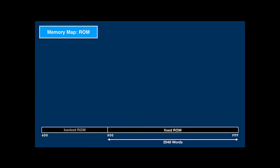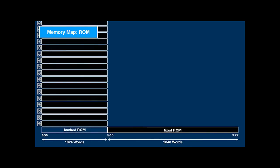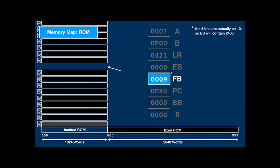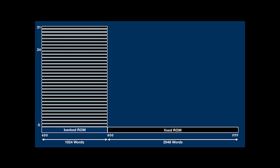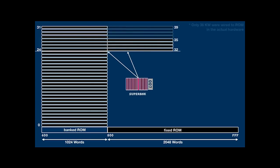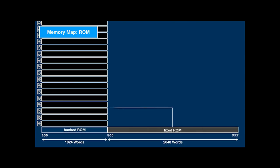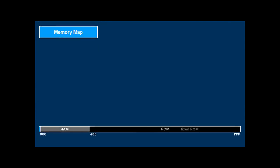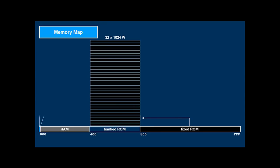ROM is organized similarly. The lower kiloword is banked; the fixed bank register (FB) selects one of the 32 banks. Support for more than 32 kilowords of ROM was added at the last minute. The super bank bit can switch the uppermost eight banks to a second set so that a total of 40 kilowords are supported by the architecture. In practice, fixed ROM contains core operating system code and fixed RAM contains core operating system data that have to be available at all times.